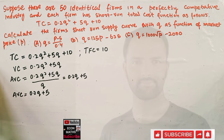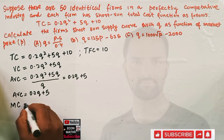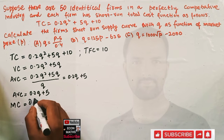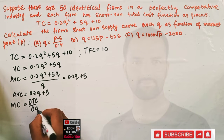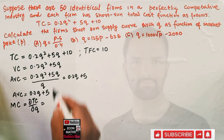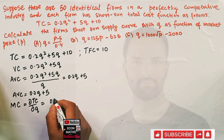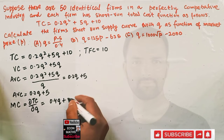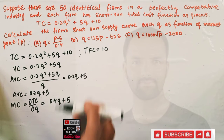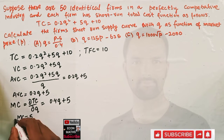Now let us find the marginal cost. Marginal cost is simply the derivative of the total cost function with respect to output q. Differentiating 0.2q² + 5q + 10 with respect to q: 2 × 0.2 gives 0.4q, the derivative of 5q is 5, and the derivative of the constant is 0. So our marginal cost equals 0.4q + 5.